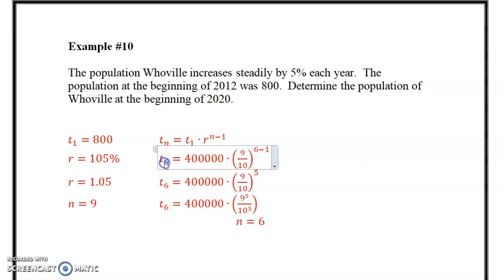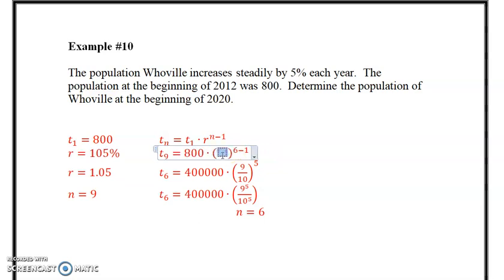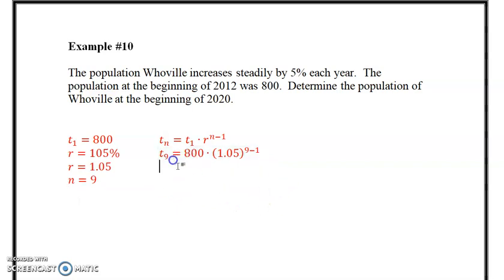So we're looking for t to the 9. Our t1 value is 800. Our r value is 1.05. And that's 9. So let's work it out. So the 9th term, because remember, the first term is 1. So we raise 1.05 to the power of 8th.